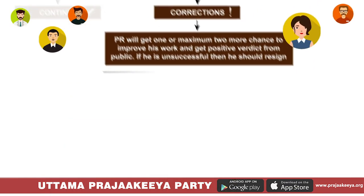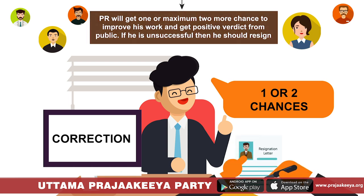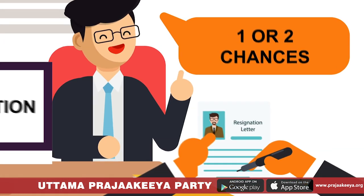He will get maximum one or two opportunities to improve his performance and get a positive opinion from people. If he doesn't succeed, he will be compelled to resign. Along with this, the public representative has to submit polling details, visual documents about his work and the people's verdict to the UPP party. The UPP party will also be constantly monitoring his work in his turf.